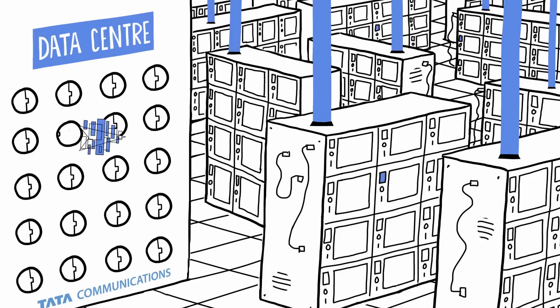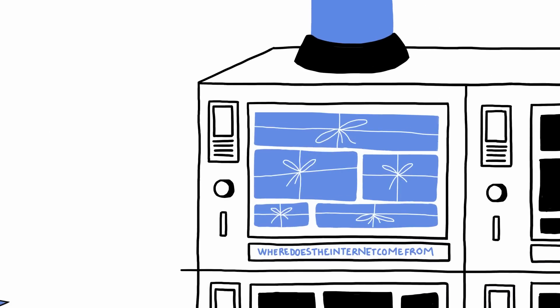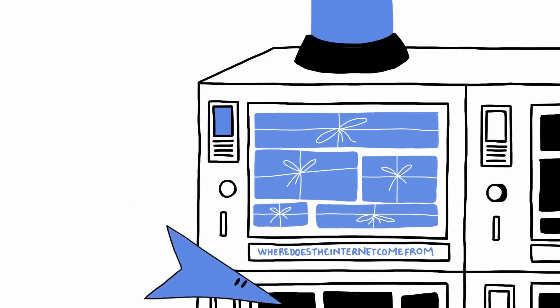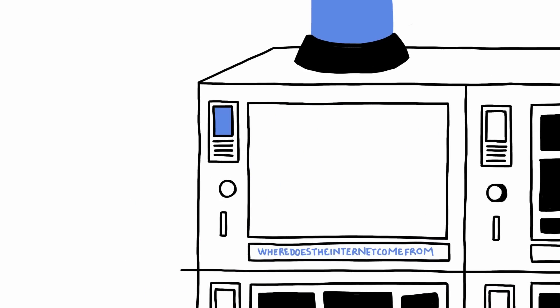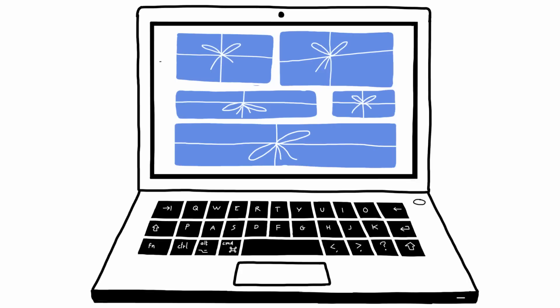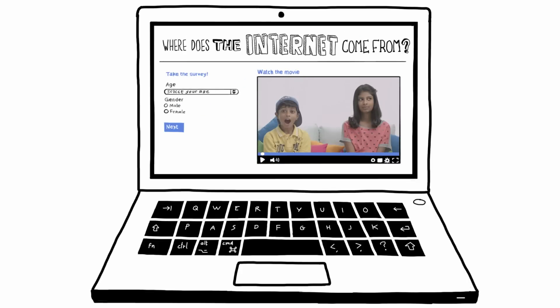The request finally reaches the data center housing the server where the website lives. The server sends the requested information back across the network, broken down into chunks of data called packets, which your device puts back together like a jigsaw to form the webpage you see on your screen.